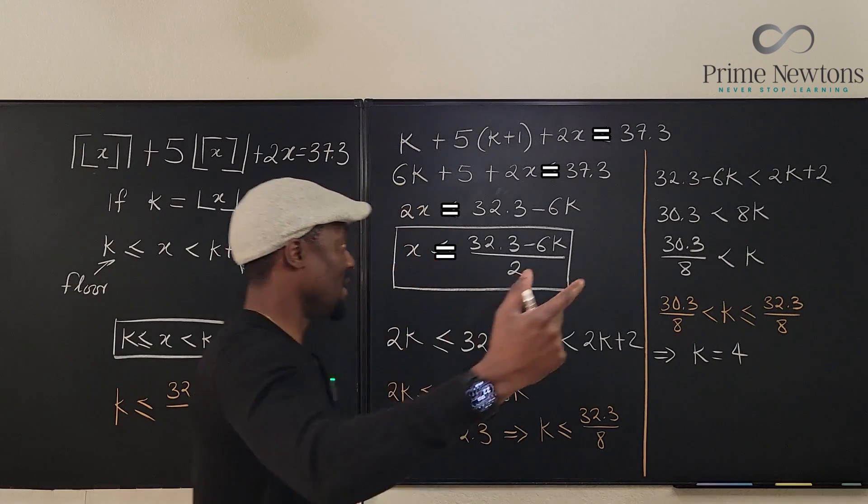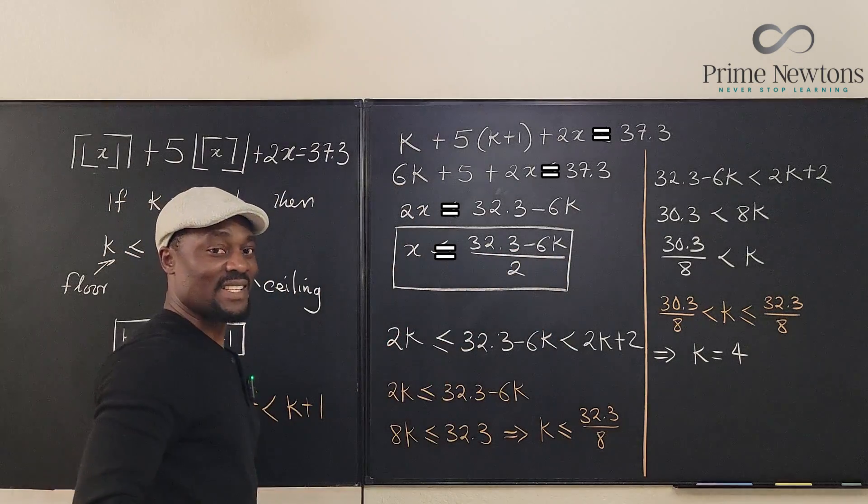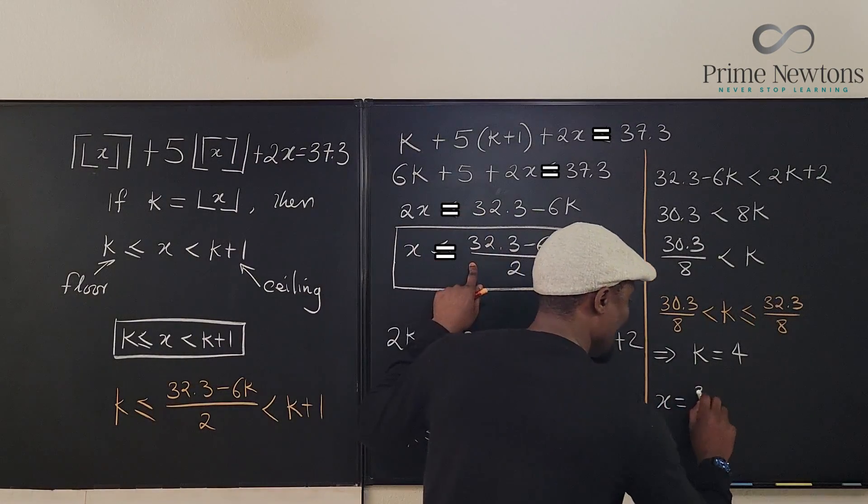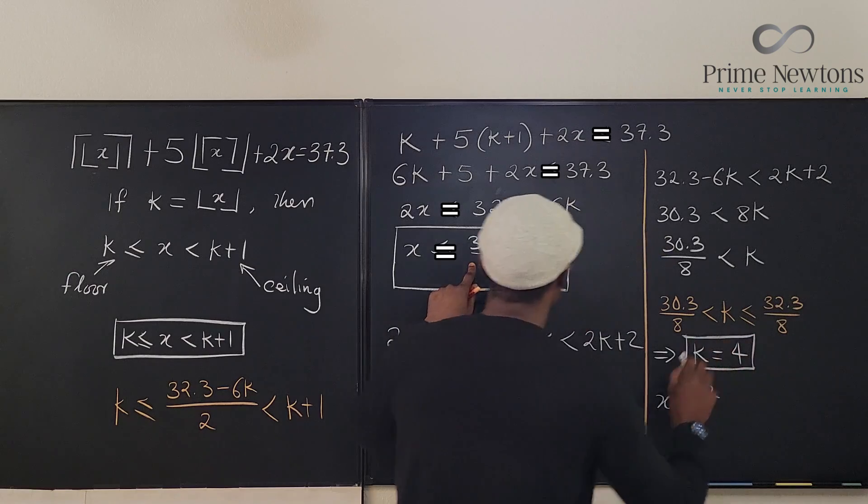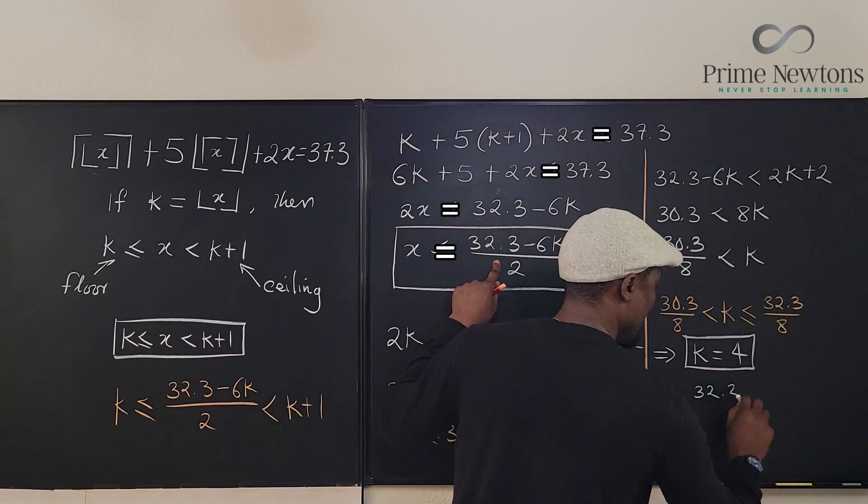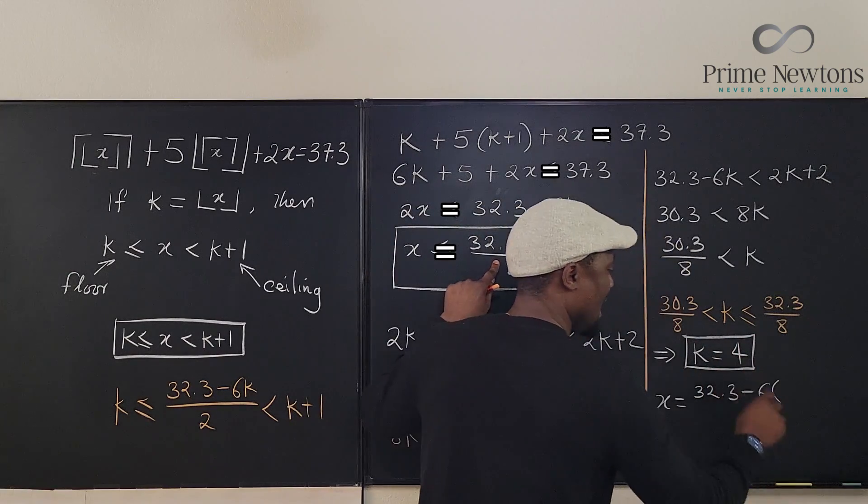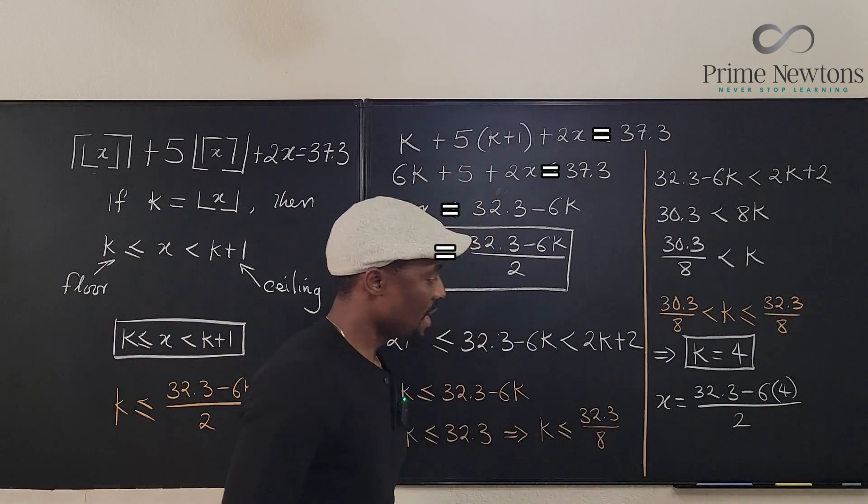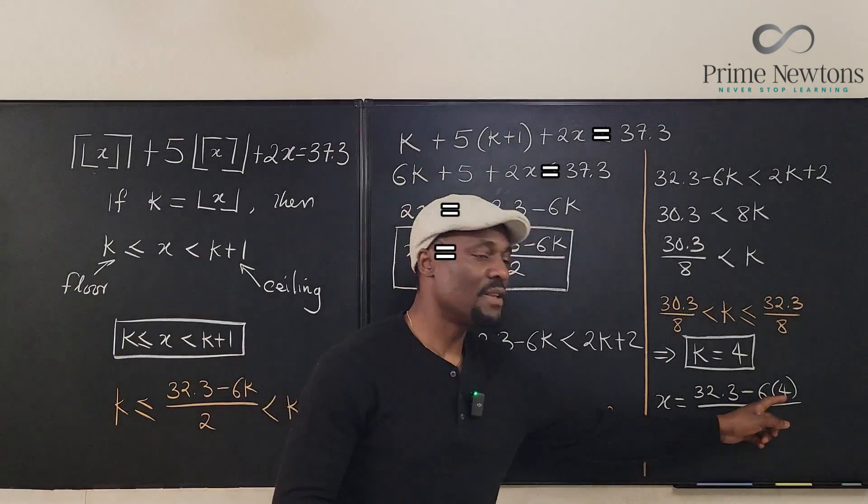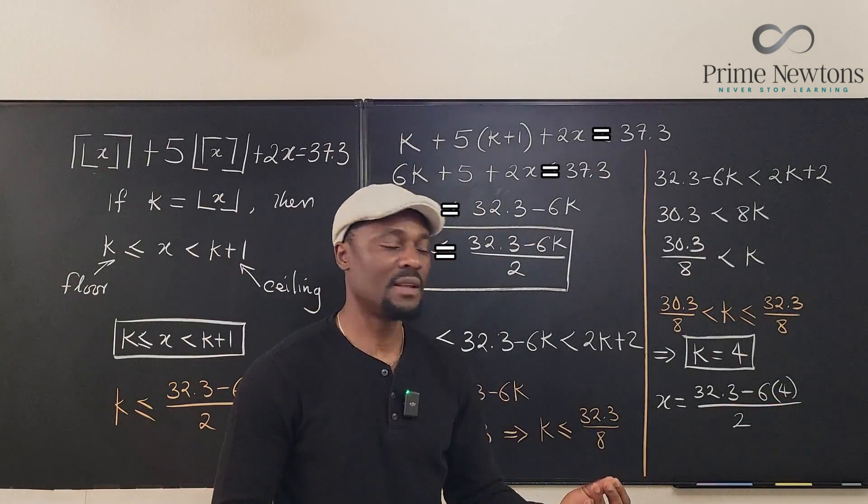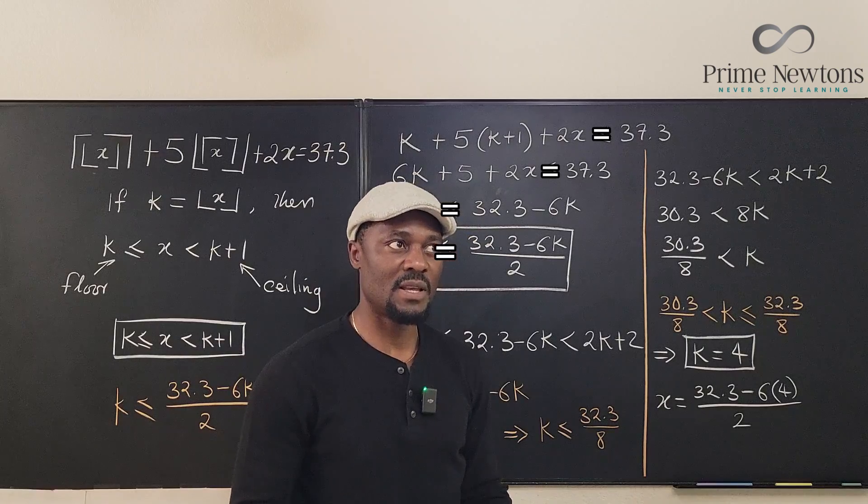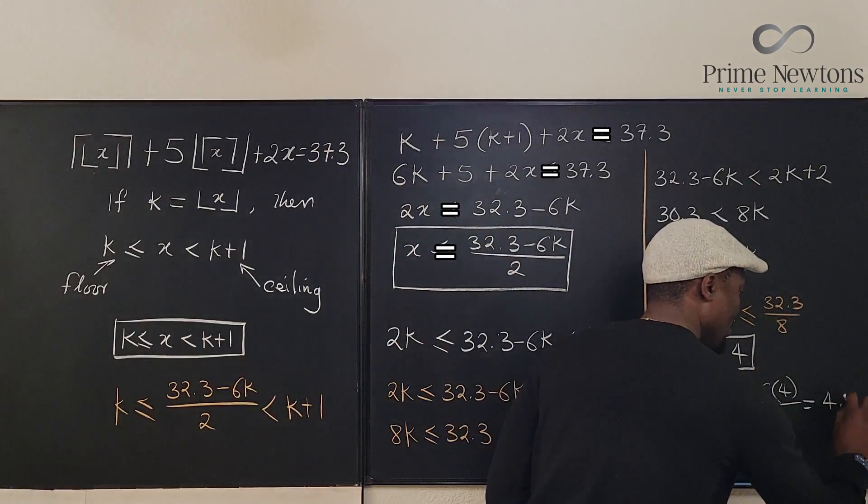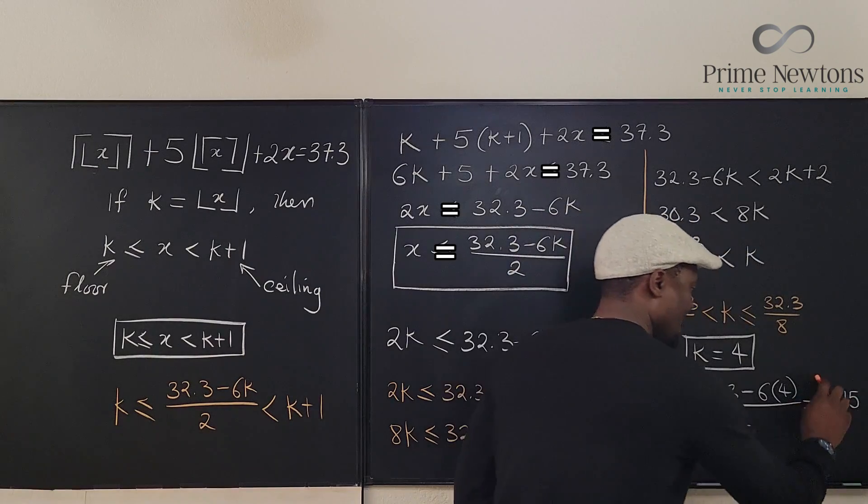That's the only integer that is between these two numbers, three point something and four point something. The only integer between them is 4, right? We found our answer because we can go here and compute what x is. So here we have x is equal to, let's box this, 32.3 minus 6 times k, which is 4, divided by 2. 32.3 minus 24 is 8.3. 8.3 divided by 2 is 4.15.